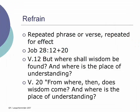Another thing to look for in Hebrew poetry is the refrain — a repeated phrase or verse, repeated for effect. An example is in the magnificent poem of wisdom in Job 28:12 through 20. Verse 12: 'But where shall wisdom be found? And where is the place of understanding?' Verse 20: 'From where then does wisdom come? And where is the place of understanding?' This adds emphasis and increases the effectiveness of that poem on wisdom, which is seeking to discover where we get wisdom. There in chapter 28 it is in such a crucial place in the book of Job.